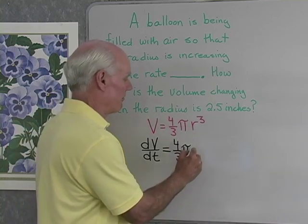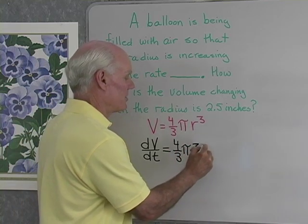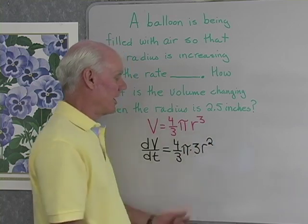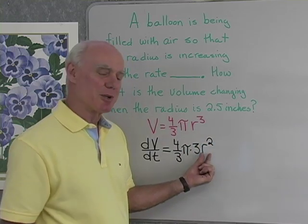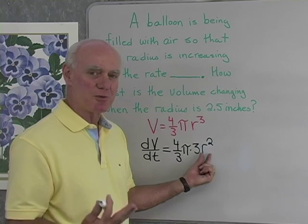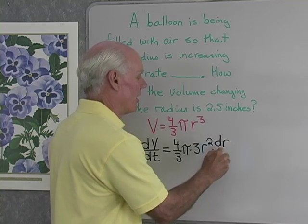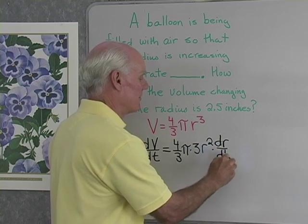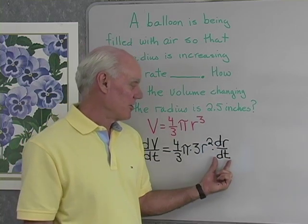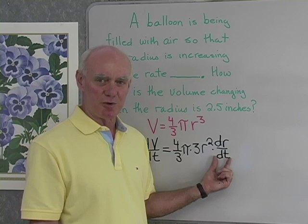Now I want to differentiate this r to the third, so I'll take the exponent out in front, 3, times the base, raised to a power 1 less. And now I have to differentiate the base, because remember, I'm differentiating with respect to t. So I'm going to multiply this times dr/dt. So that right there stands for the rate of change of radius with respect to time.